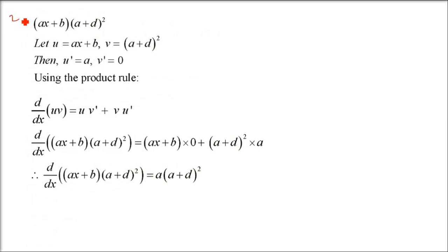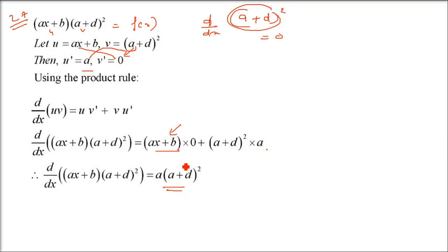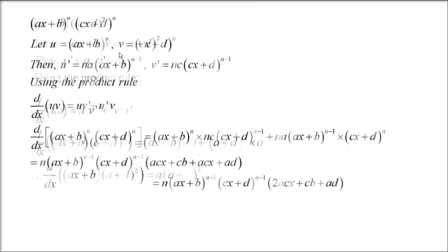Question number 27: f(x) = (ax + b)(a + d)². Taking u = (ax + b) and v = (a + d)², we find u' = a (since b is constant), and v' = 0 (since (a + d)² contains no x — it is a constant). So by the product rule: u·v' + v·u' = 0 + (a + d)²·a = a(a + d)². That is the final answer.